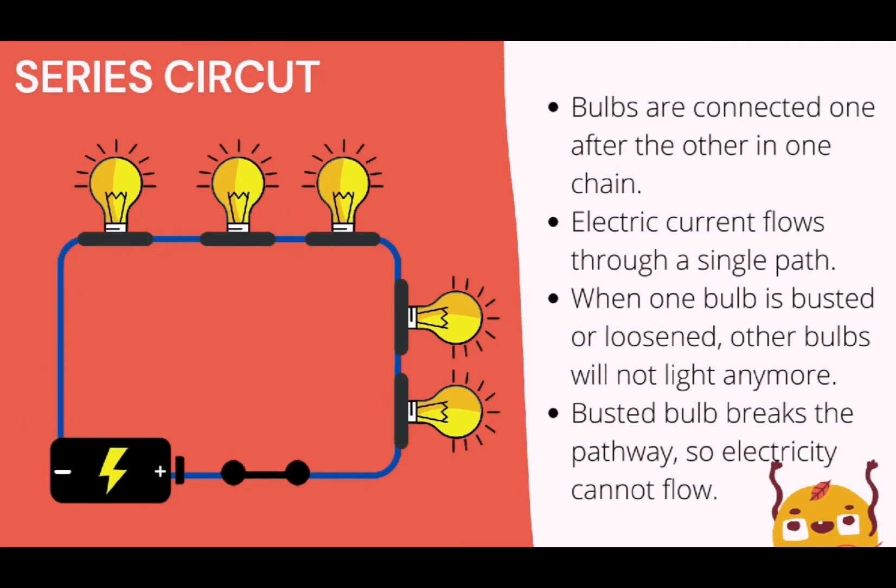Makikita rin na mayroon lamang single path or isang daanan ang electric current mula sa source or battery patungo sa mga bumbilya. That's why kapag ang isang bumbilya ay pundido or maluwag ang pagkakatakid nito, ay hindi na iilaw ang iba pang mga bumbilya sa series circuit.